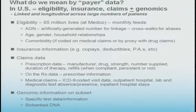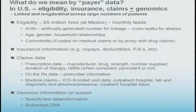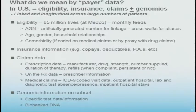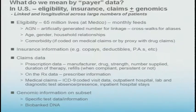This is a busy slide. For those of you curious about what payer data is — I don't actually use that term, it was given to me for today's presentation. In the United States, these are the buckets of data available within different payer environments. I work for Medco. We cover 65 million Americans for outpatient drugs, so we have all of their outpatient drug information. We carry what we call an eligibility file — an anonymized but linkable individual number for each person, including their aliases as they switch jobs. That gives us age, gender, household relationships.